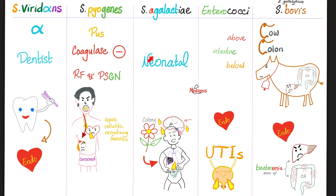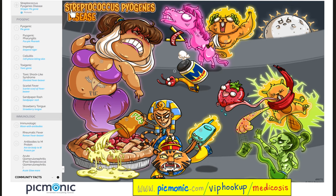Group B — Streptococcus agalactiae: neonatal sepsis, meningitis, pneumonia. Viridans — the dentist — and endocarditis; don't forget Streptococcus mutans and Streptococcus mitis, the mighty heart and the mutant Frankenstein dentist. Enterococci — endocarditis and urinary tract infections. Bovis (now gallolyticus) — human bacteremia and GI cancers including colon cancer.